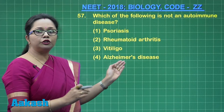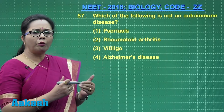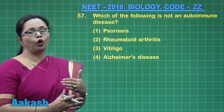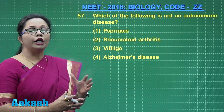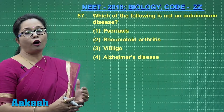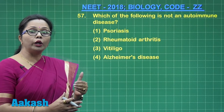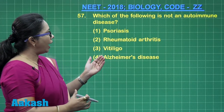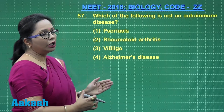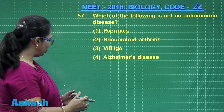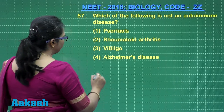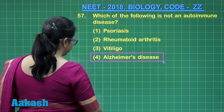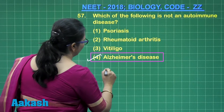Alzheimer's disease is caused when beta-amyloid plaques are formed, leading to deficiency of acetylcholine as cholinergic neurons are damaged. This disorder is not considered autoimmune. So the correct option is answer 4.